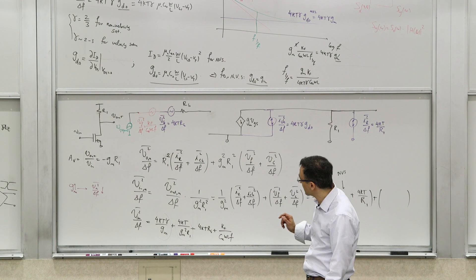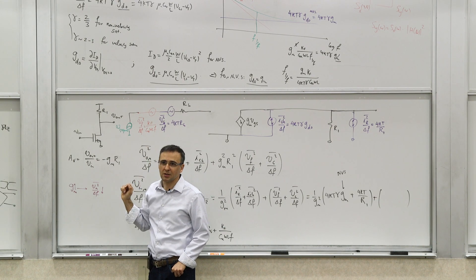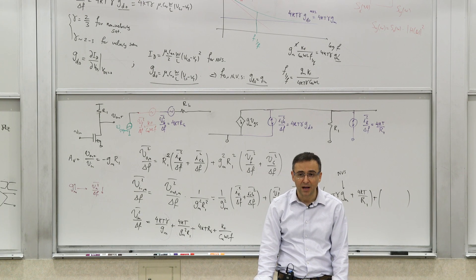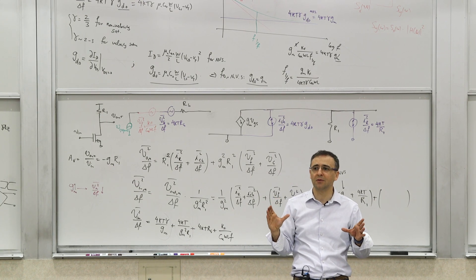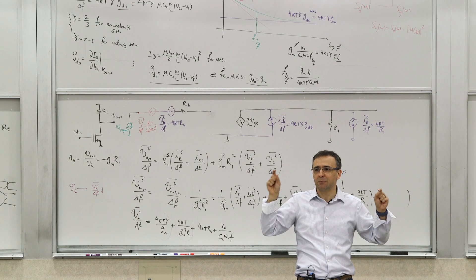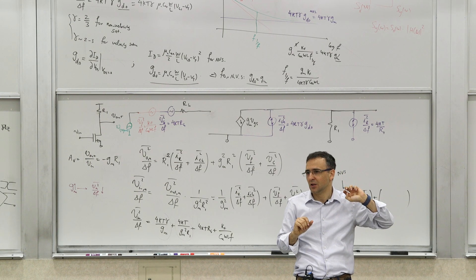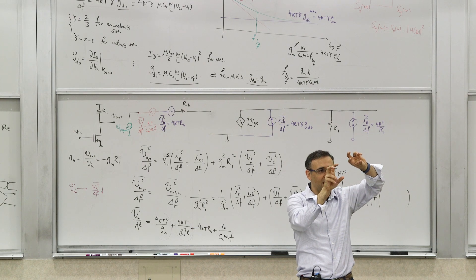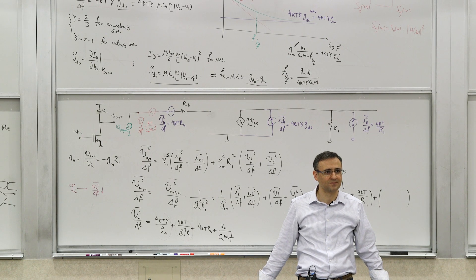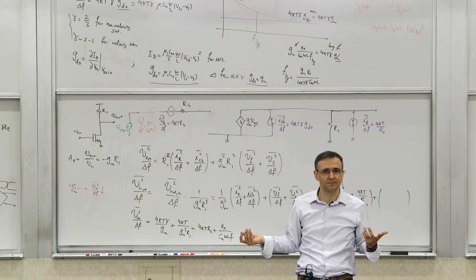One important thing we'll discuss later: in general, it's not sufficient to have just one input-referred noise source — you need at least two, a current and a voltage. Any circuit with multiple noise sources can be reduced to a noiseless circuit with one equivalent input-referred current source and one voltage source. We'll cover that complete equivalent noise model next time.